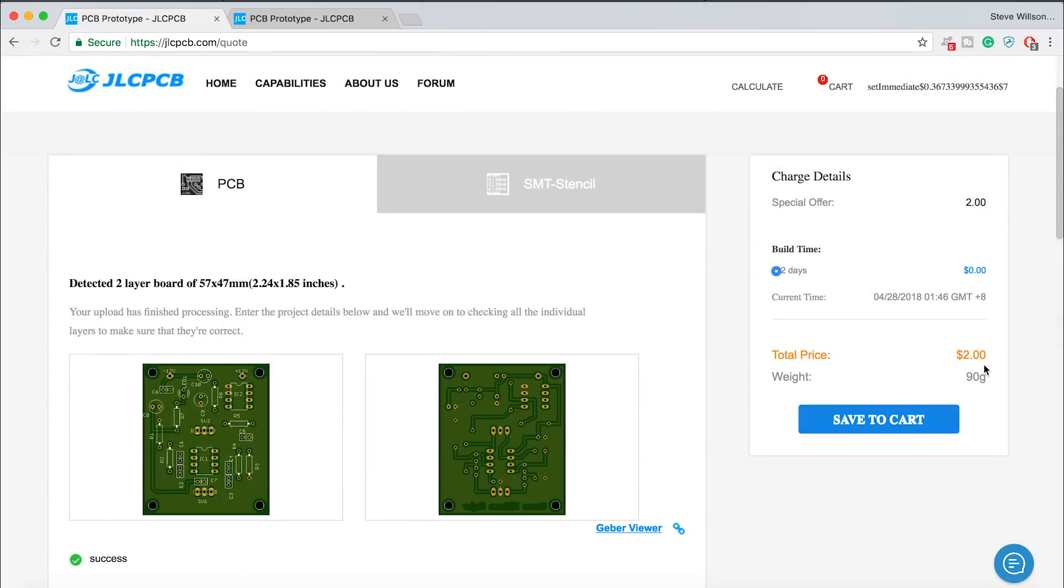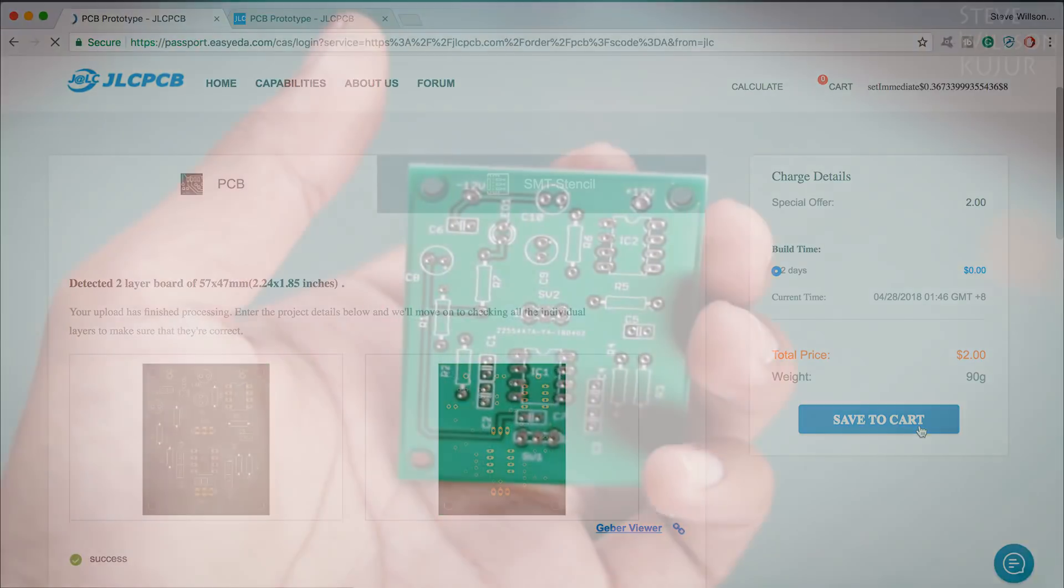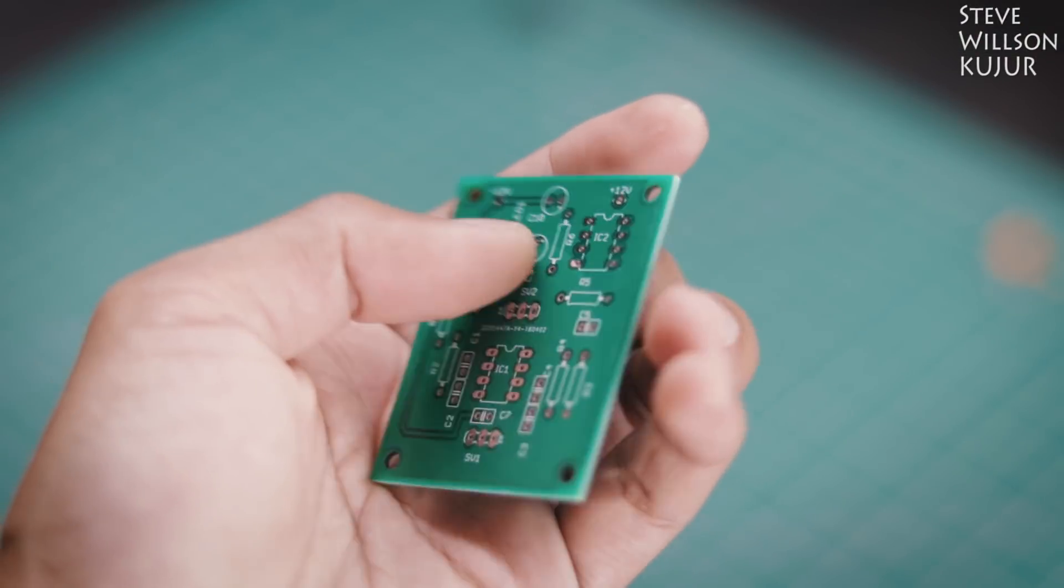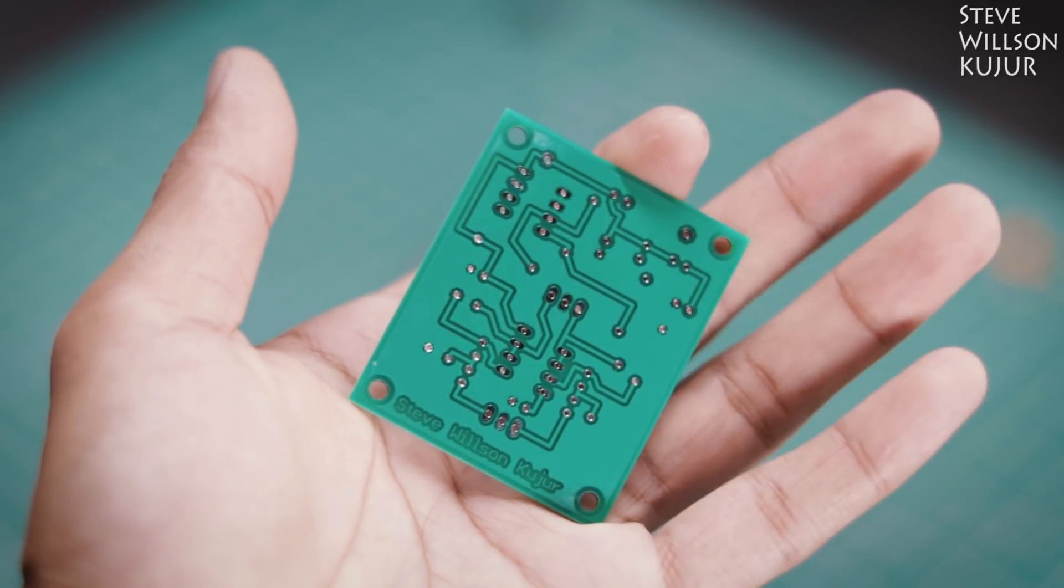Processing time is only 48 hours. The shipping time is also very quick. After 7 days, I got my PCBs. Just look at the quality. It's superb. And I paid only $2.